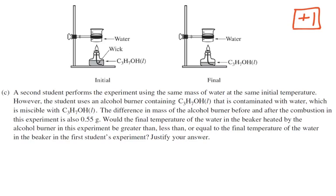Part C: a second student performs the experiment using the same mass of water at the same initial temperature. However, the student uses an alcohol burner containing alcohol that is contaminated with water, which is miscible with C3H7OH. The difference in mass of the alcohol burner before and after the combustion in this experiment is also 0.55 grams.